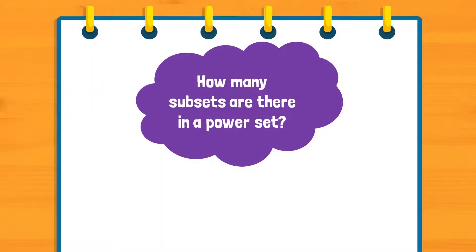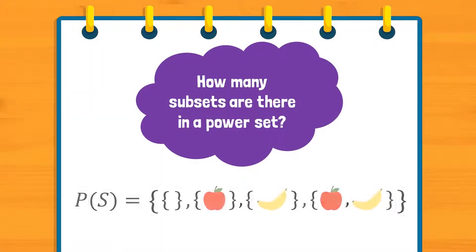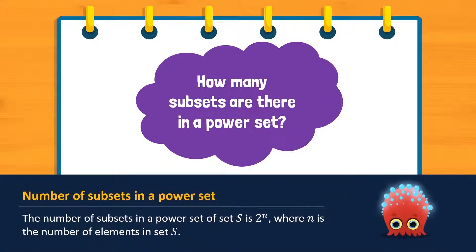How many subsets are there in a power set? Do we need to list out all the subsets and then count them one by one? It turns out we can use a simple formula to count the number of subsets in a power set: 2 raised to the power of n, where n is the number of elements in the given set.